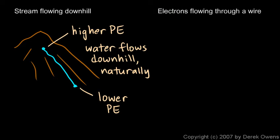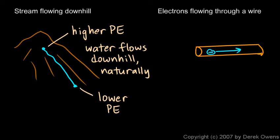Now think about electrons flowing through a wire. Imagine a little electron inside a wire moving through it. It turns out the electron is moving from a place of higher energy to a place of lower energy.